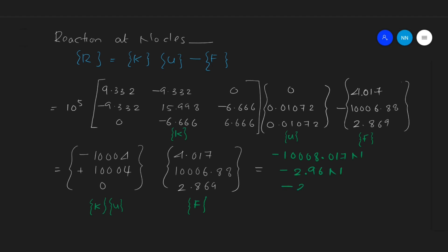These three forces are the reactions at nodes 1, 2, and 3 respectively. The sum of these reaction forces will be equal and opposite to the applied forces and the force due to self-weight.